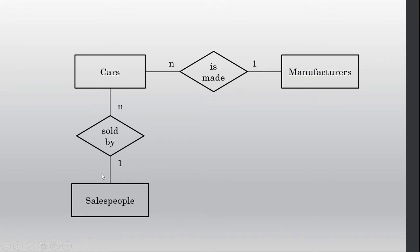So a car is sold by, right? So we've got a list of cars maybe in our dealership. We've got a list of salespeople in our salesperson table. And there's a relationship between those two tables. So we need to represent that with a diamond.